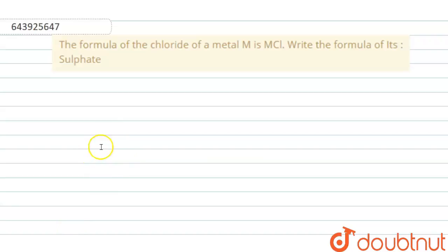The formula of the chloride of a metal is MCl, where M is the metal. We have to write the formula of its sulfate.